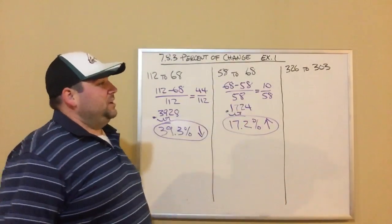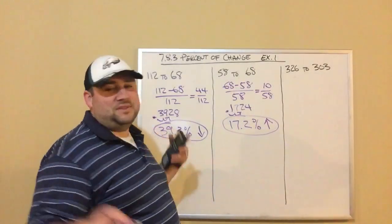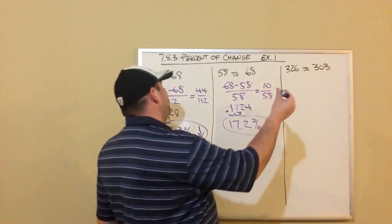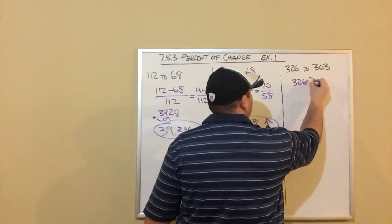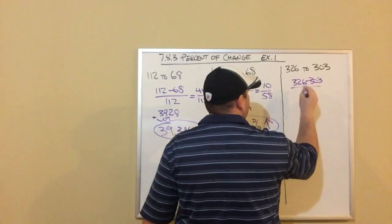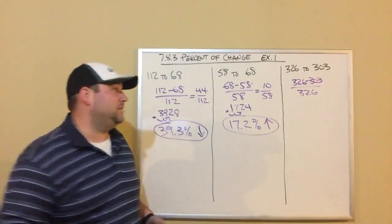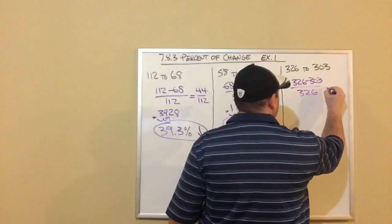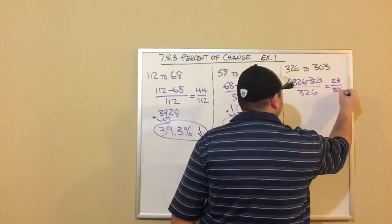All right. Our final one, 326 to 303. So same thing. We're going to find the amount of change by subtracting the two numbers. So 326 minus 303. That's going to be over our original amount, which is 326 because that's what we started with. So we do that subtraction. 326 minus 303 is 23. And that's still over 326.